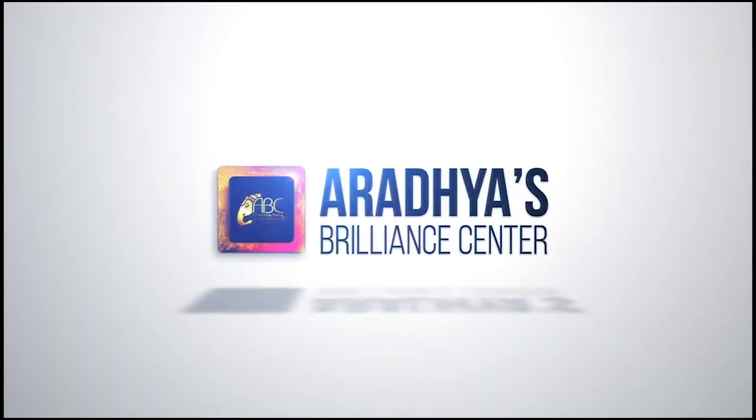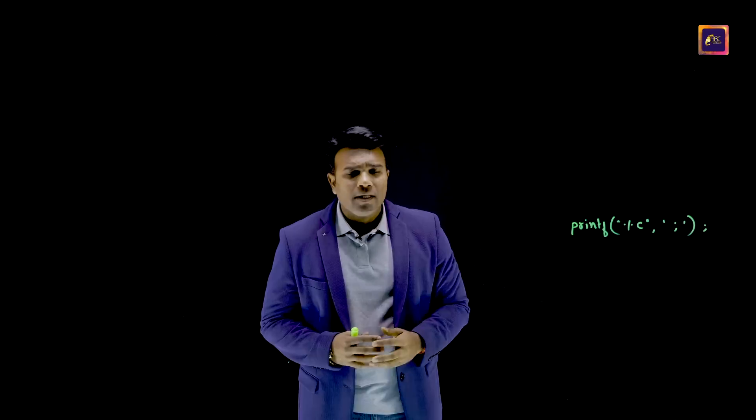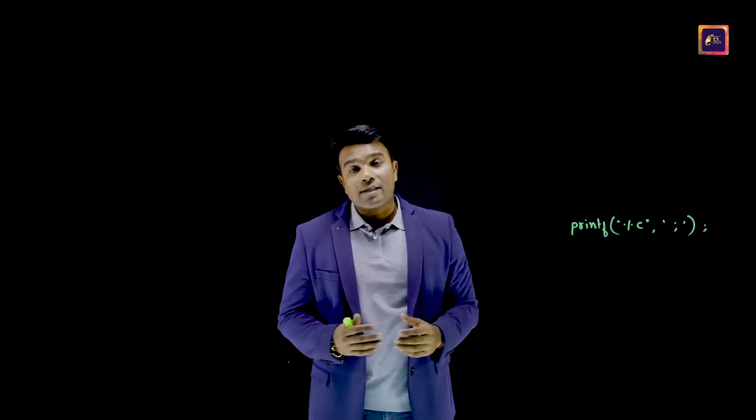Let us today understand how to print a semicolon without using a semicolon. We can print a semicolon in C language using a printf statement. A semicolon happens to be a character symbol, so I have enclosed it within single quotes and used the %C format specifier. These are some of the requirements of the C language. This is the statement which is going to print a semicolon on the screen.